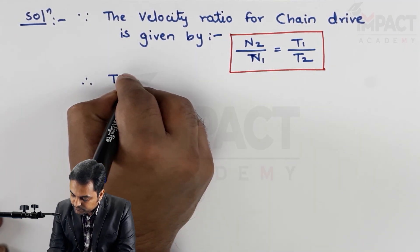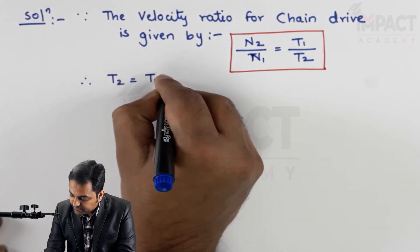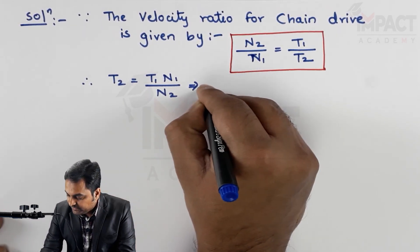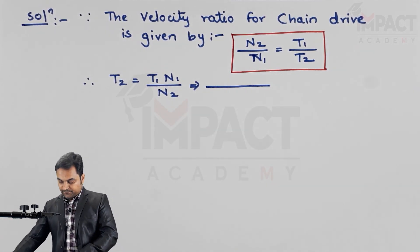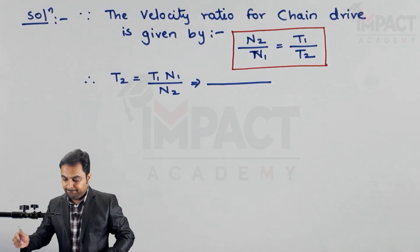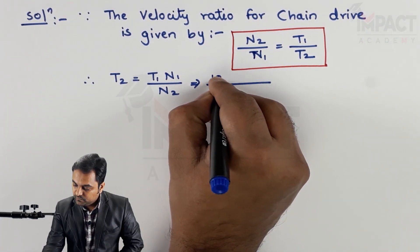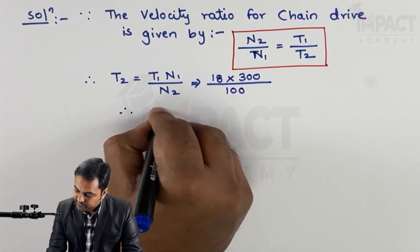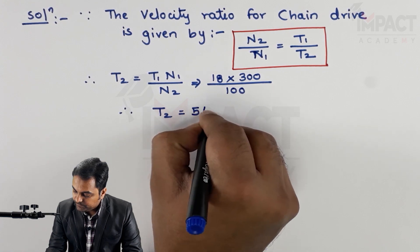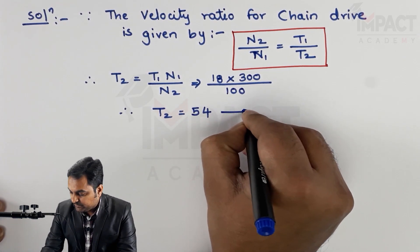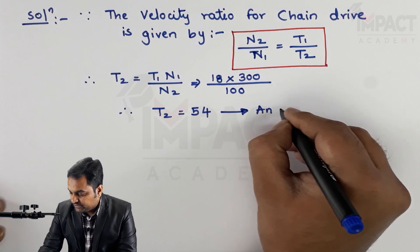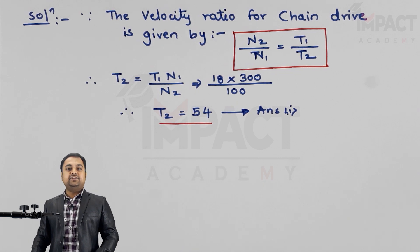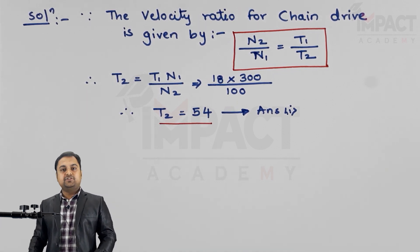Therefore, t2 = (t1 × n1) / n2. Putting in the values: t1 is 18, n1 is 300, and n2 is 100. The answer for t2 comes out to be 54 — that is the total number of teeth on the driven sprocket. This is the first answer.